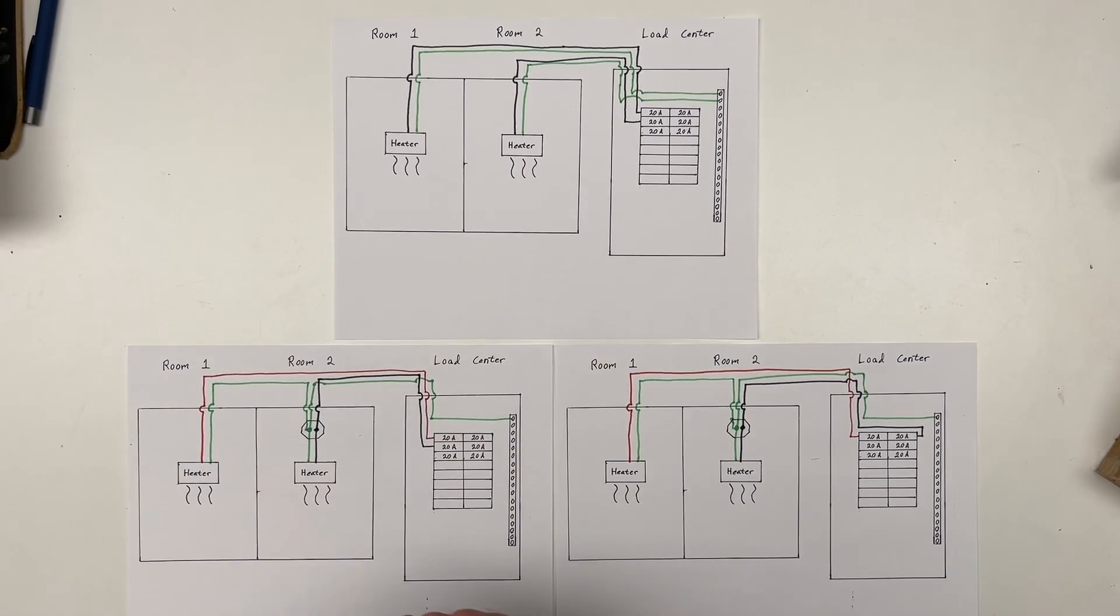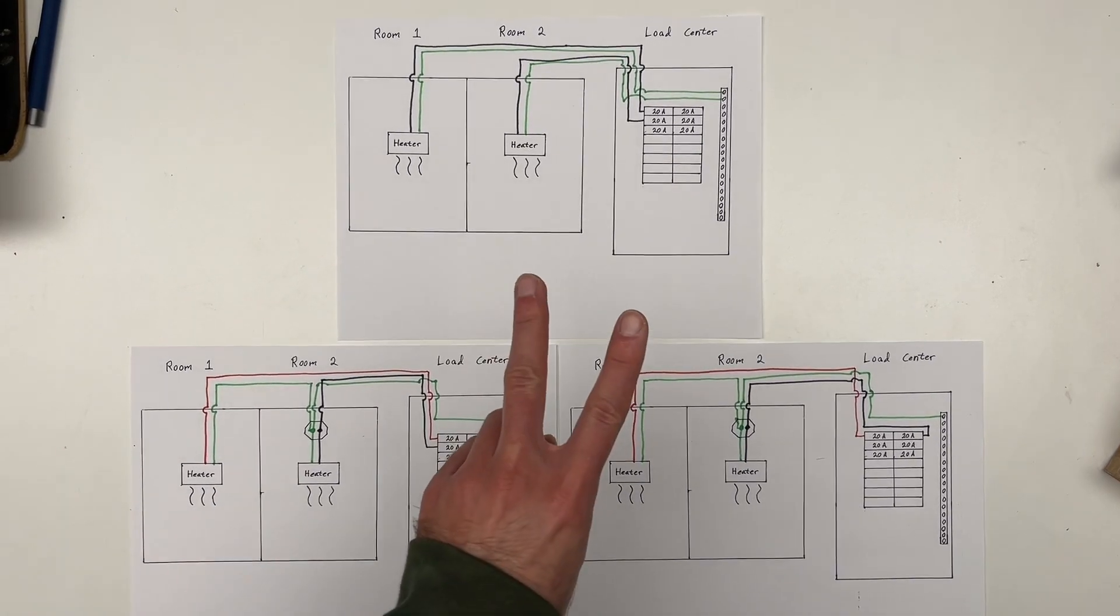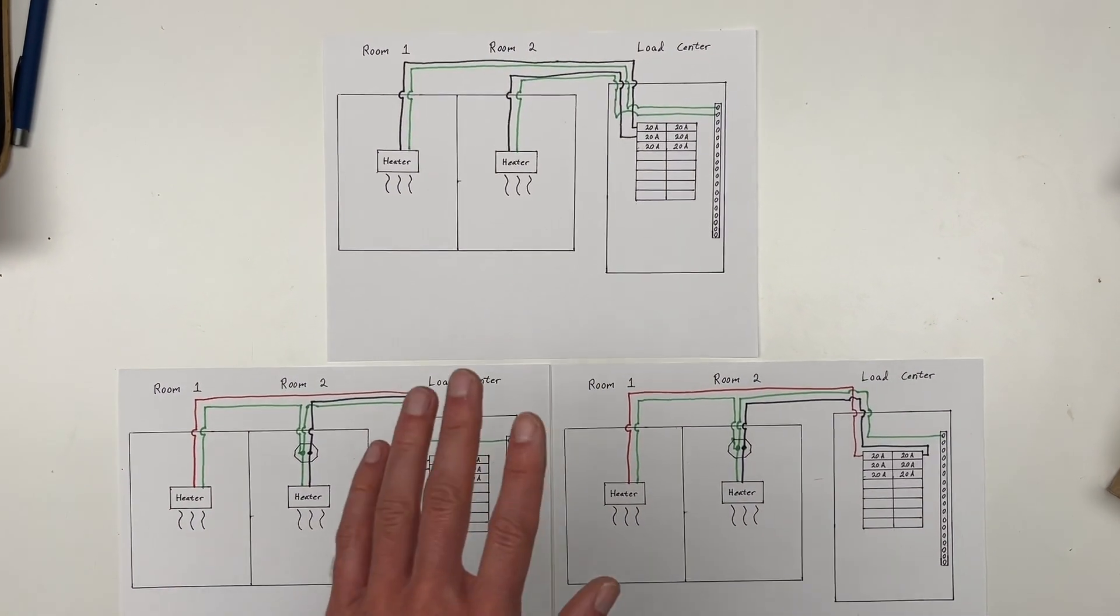So here are three ways that you could wire up a house, but only two of them are safe. So let's understand why.